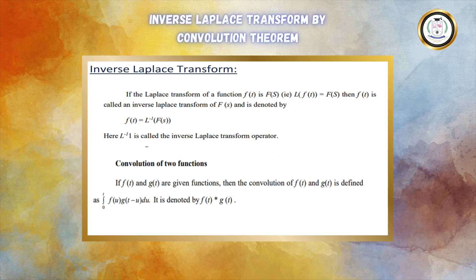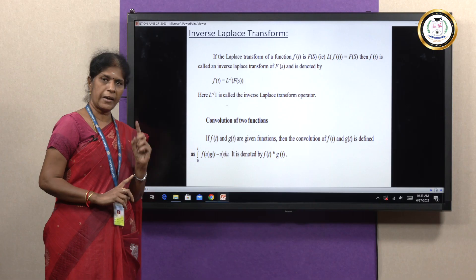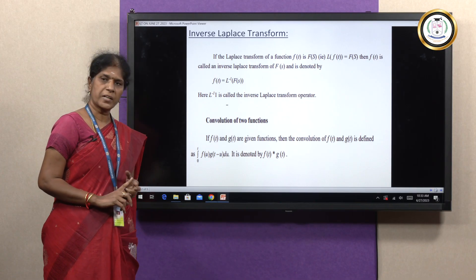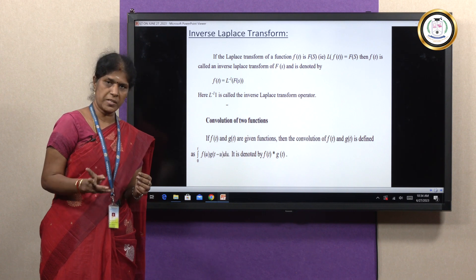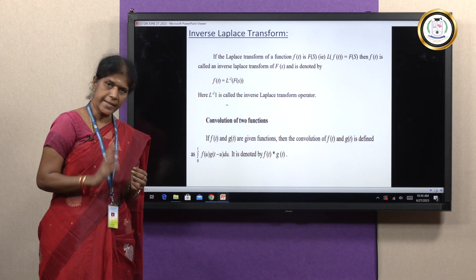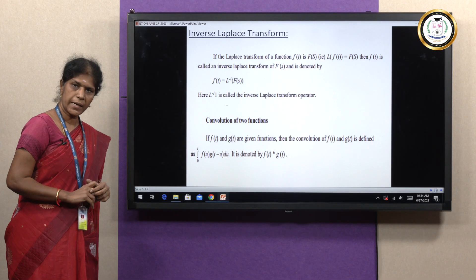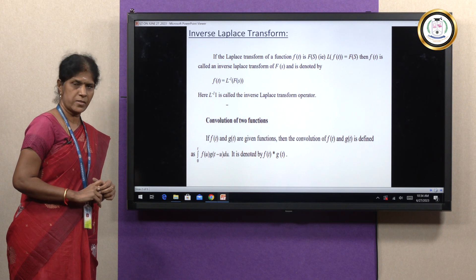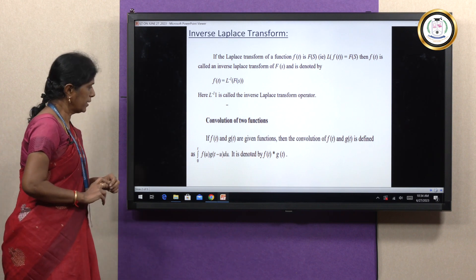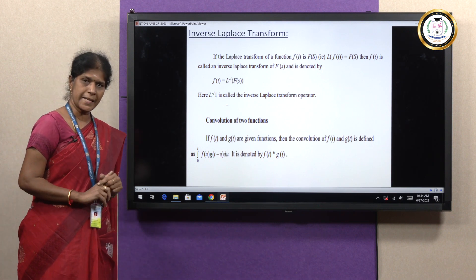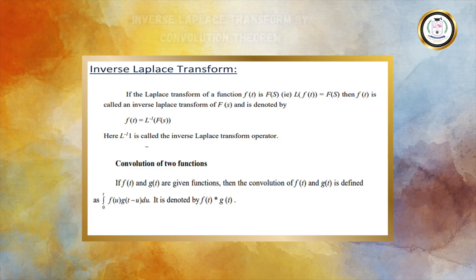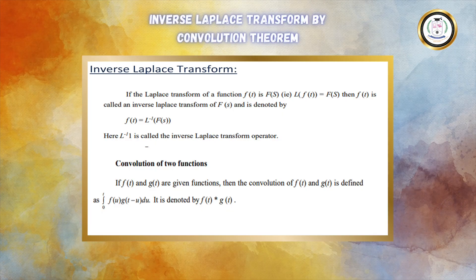Next, we are going to define the convolution of two functions. If f(t) and g(t) are two functions, then the convolution of the two functions is defined as the integral from 0 to t of f(u)·g(t − u) du, which is denoted by f(t) * g(t). Here, in f(t) we are replacing t as u, and in g(t) we are replacing t as t − u.